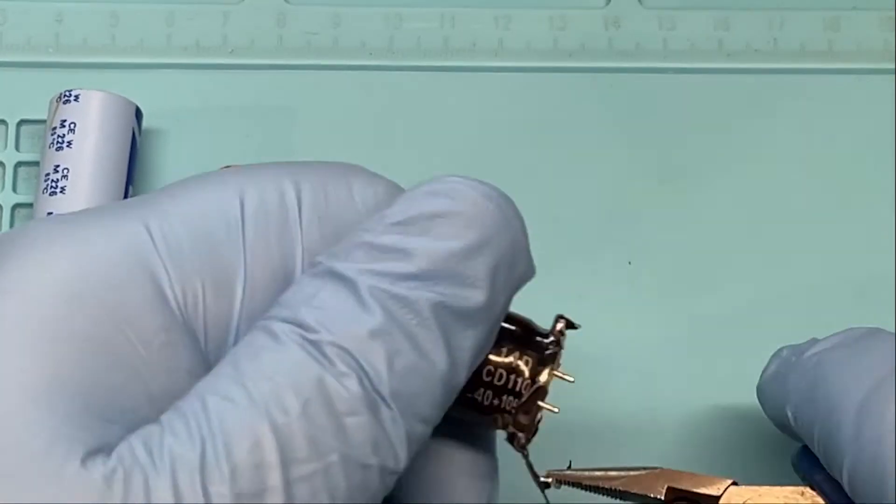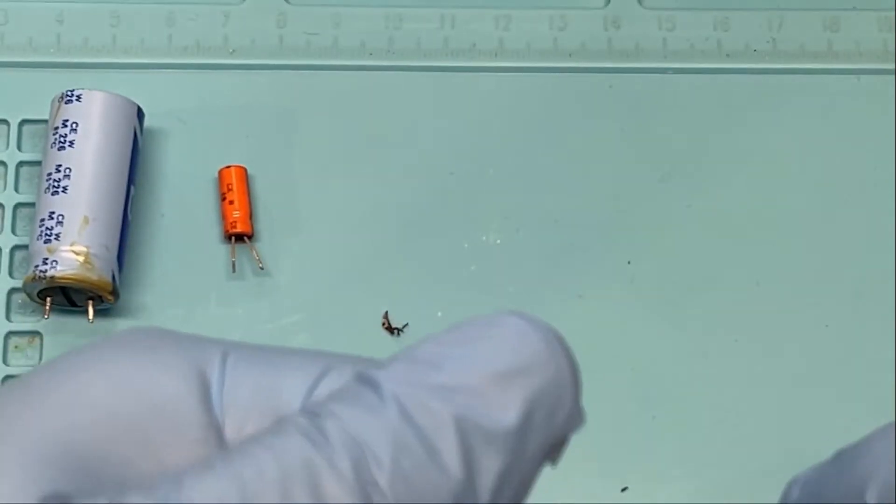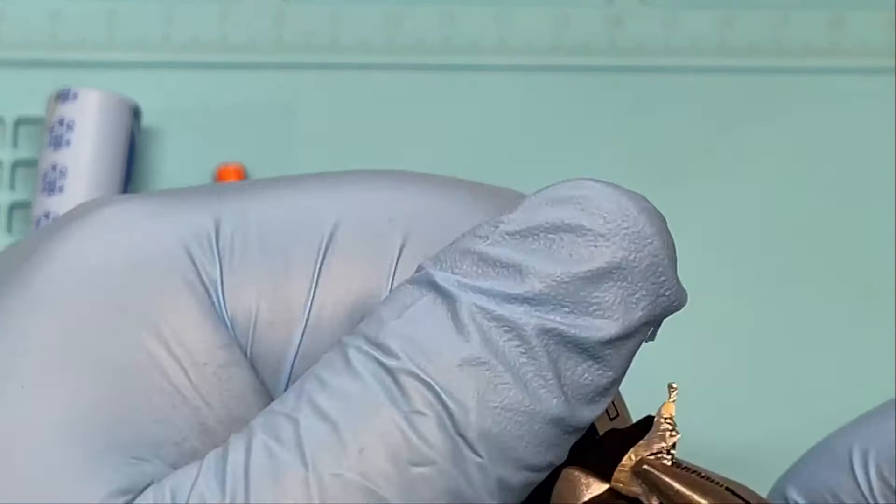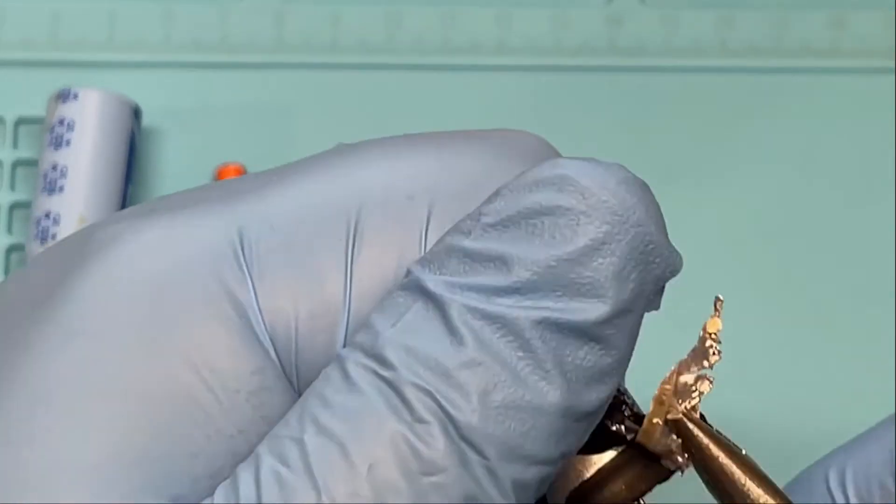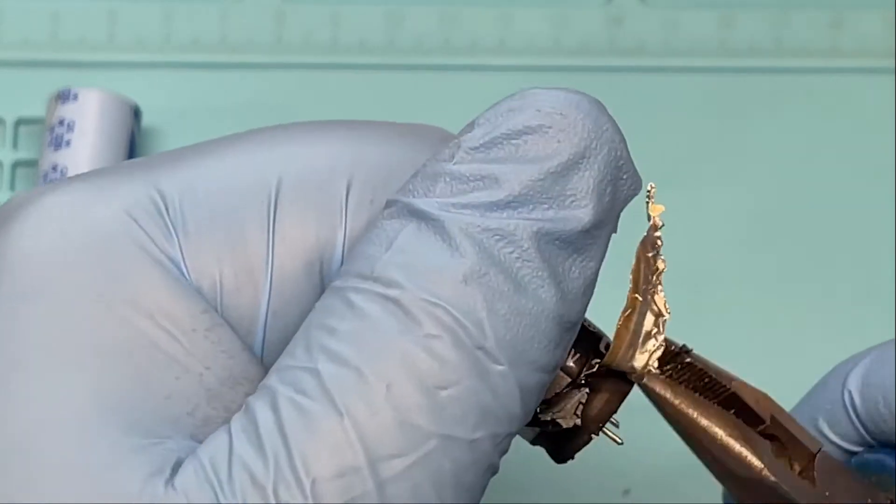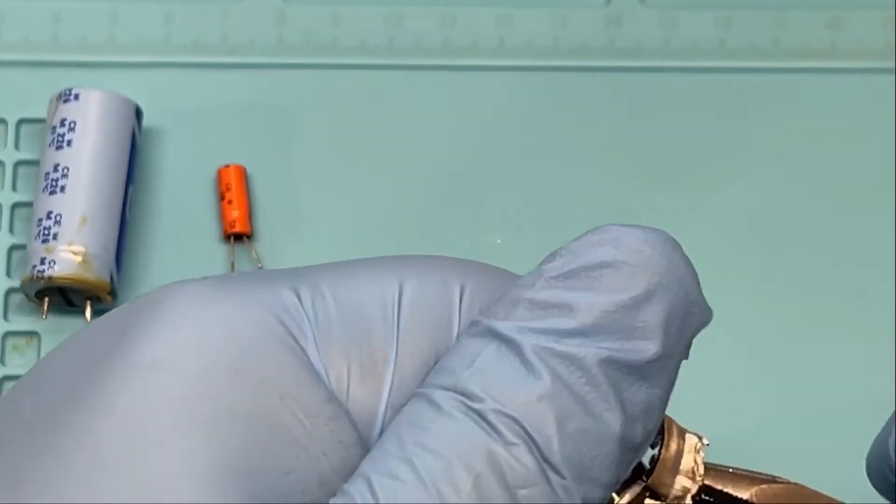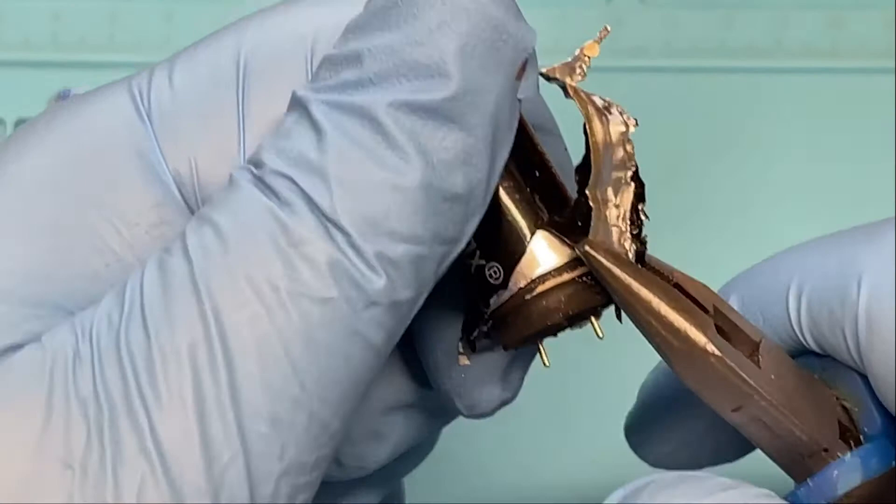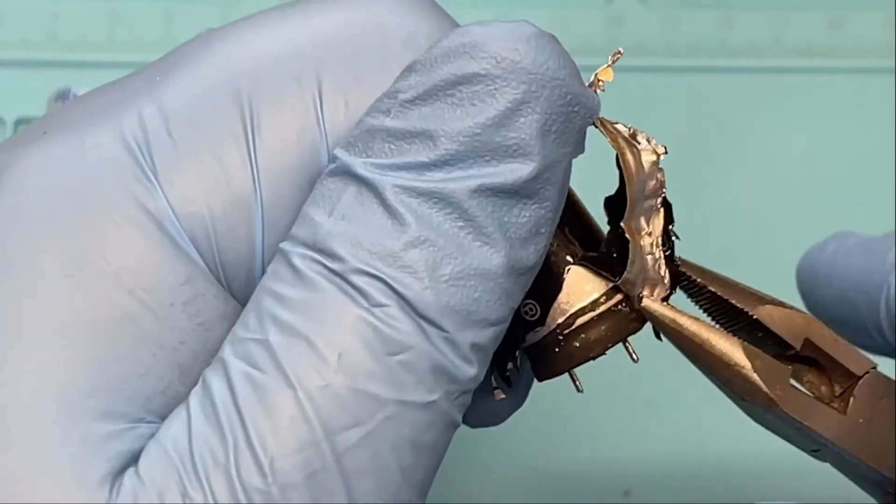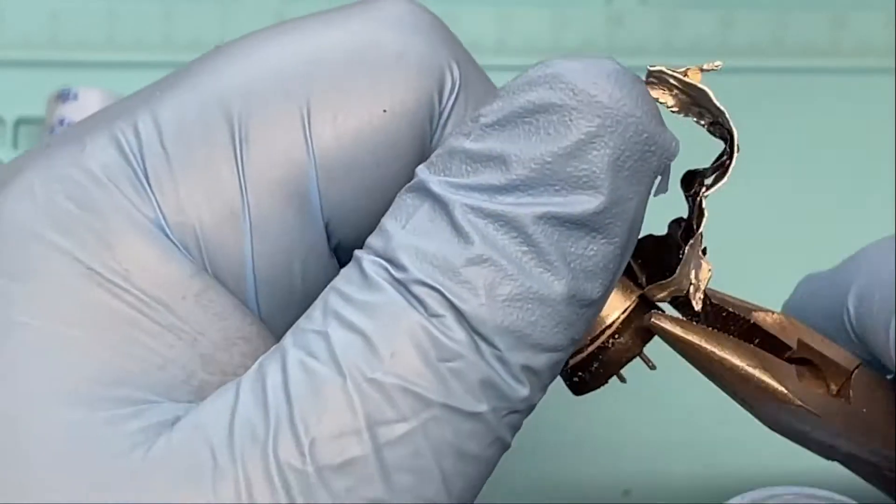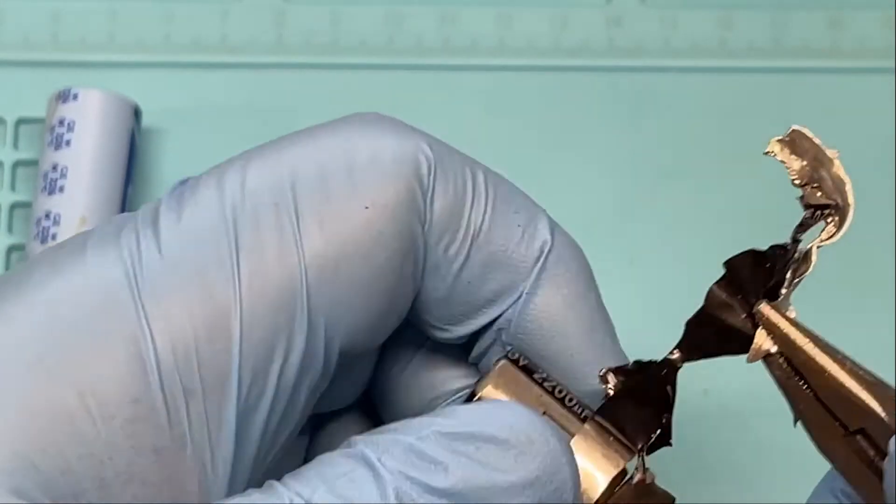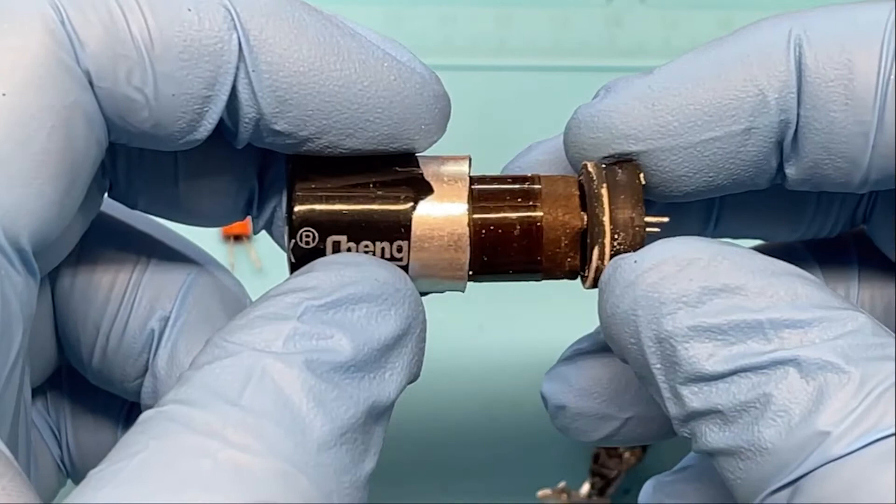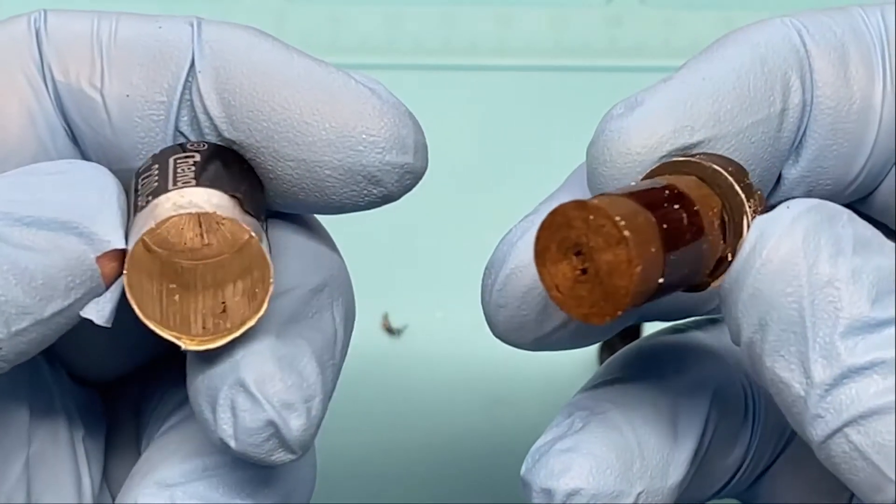It's kind of like peeling an orange. So you can see that the outer wrapper that has all the writing on it is just part of a plastic cover. And look at that.